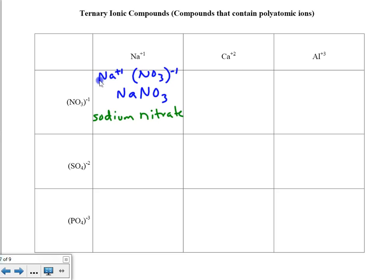Na⁺¹ and SO₄⁻². Crisscrossing, we're going to need two sodiums to match up with the 1 sulfate to make it neutral. So again, I'm dropping the parentheses. The formula is Na₂SO₄. This substance is called sodium sulfate.